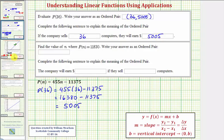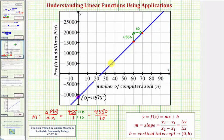Looking at this graphically, we just found this point here on the linear function. The coordinates would be 36 comma 5,005. When the input was 36, the output was 5,005.